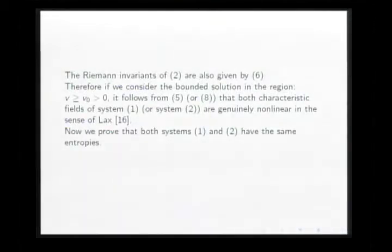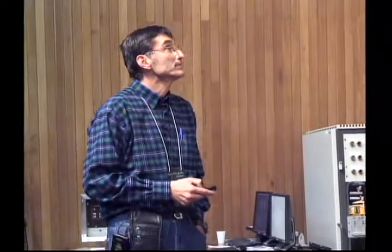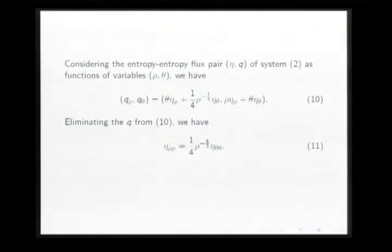Now, we prove that two systems have the same entropy. Here, I need to make a change of variable. You see system two is equivalent to this. You make this change of variable, and system two is equivalent to this in the variable rho and theta. We consider the entropy-entropy flux pair eta-q of system two as function of variables rho and theta. And we have this expression. In this case, eliminating q from equation 10, we have this expression.